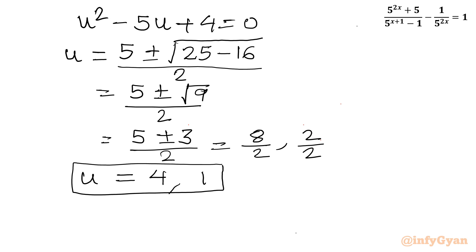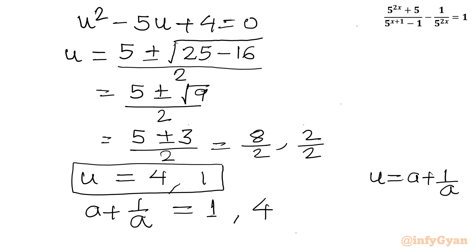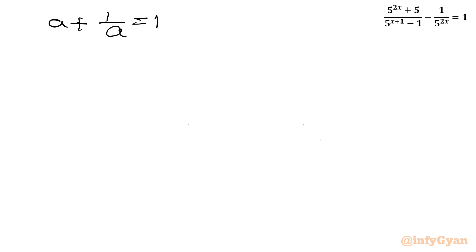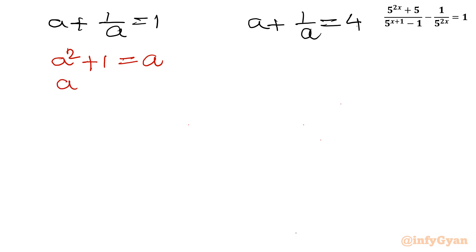Now u was our substitution: u equals a plus 1 over a. So we set up two equations: a plus 1 over a equal to 1, and a plus 1 over a equal to 4. Multiplying both sides by a for the first equation: a squared plus 1 equal to a, or a squared minus a plus 1 equal to 0.